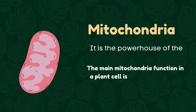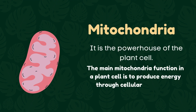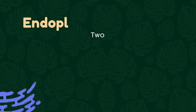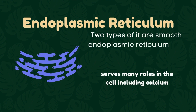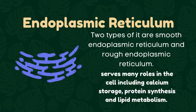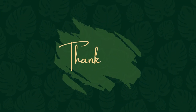Mitochondria: it is the powerhouse of the plant cell. The main mitochondria function in a plant cell is to produce energy through cellular respiration. Endoplasmic reticulum: two types are smooth endoplasmic reticulum and rough endoplasmic reticulum. It serves many roles in the cell, including calcium storage, protein synthesis, and lipid metabolism.